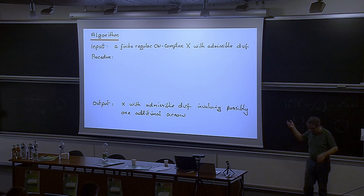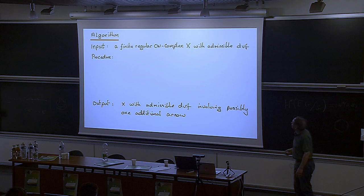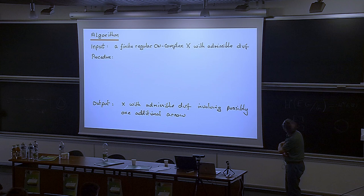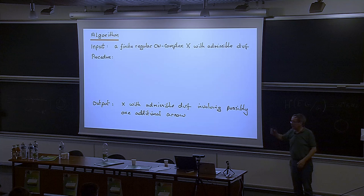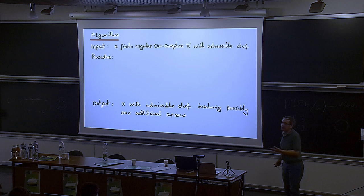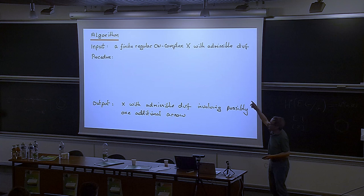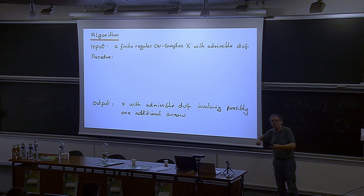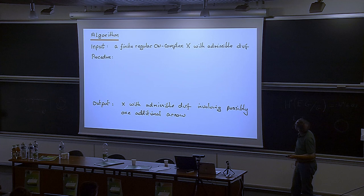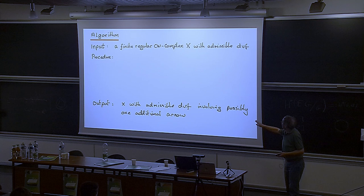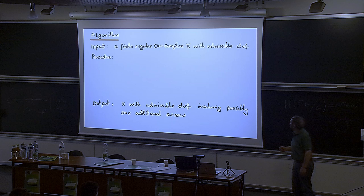The algorithm is really — you just do the obvious thing and it seems to work quite well. The algorithm I want to talk about: you start off with a finite regular CW complex. Finite meaning you've only got finitely many cells. Suppose you have a discrete vector field on it and you'd like to extend it — a discrete vector field could consist of zero arrows. You produce a new discrete vector field which has all the existing arrows and possibly an extra one, and if you can do that repeatedly you can build up discrete vector fields.